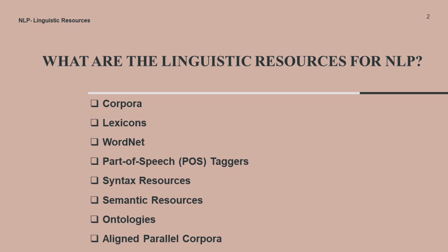Along with them there are semantic resources as well. Semantic resources focus on meaning representation and understanding. These include semantic role labeling (SRL) datasets, which annotate the roles played by different entities in a sentence, as well as resources for semantic parsing, such as PropBank and FrameNet.